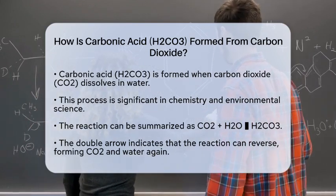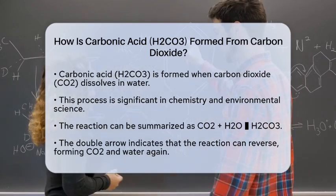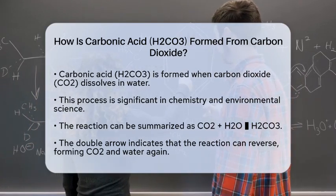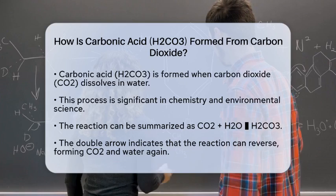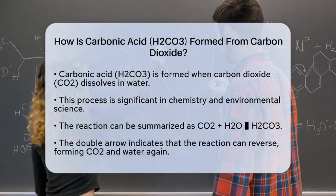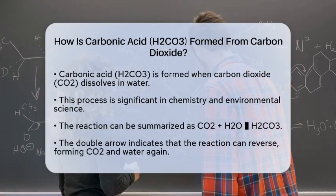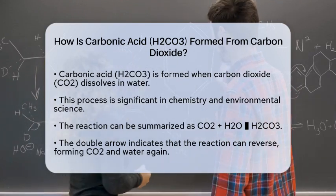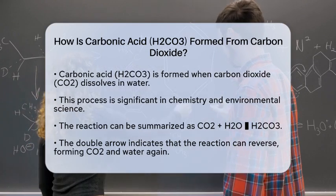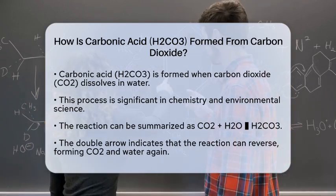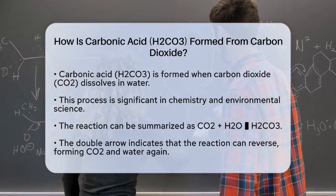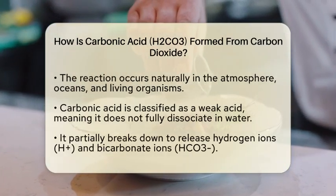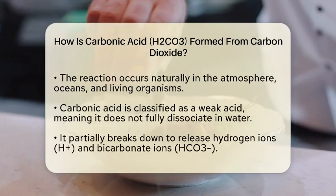Carbonic acid, which has the chemical formula H2CO3, forms when carbon dioxide gas dissolves in water. This reaction is essential in various fields, including chemistry and environmental science. When carbon dioxide comes into contact with water, a chemical reaction occurs. The carbon dioxide molecules interact with water molecules, resulting in the formation of carbonic acid. This reaction can be represented by a simple equation: carbon dioxide plus water yields carbonic acid.